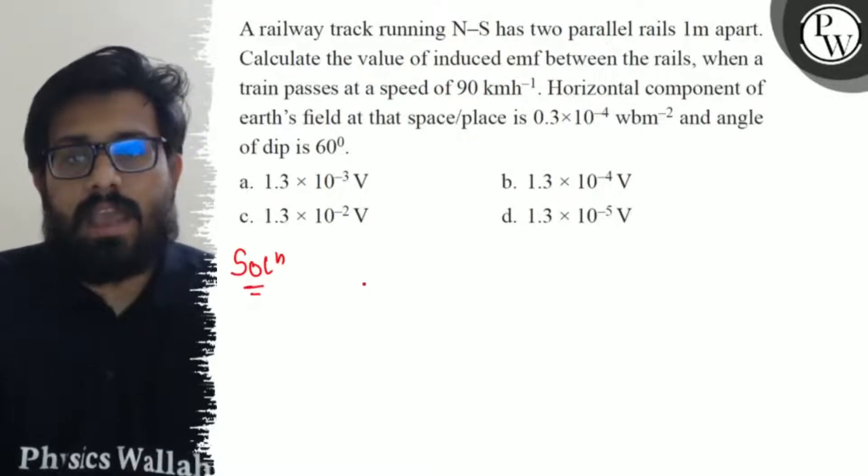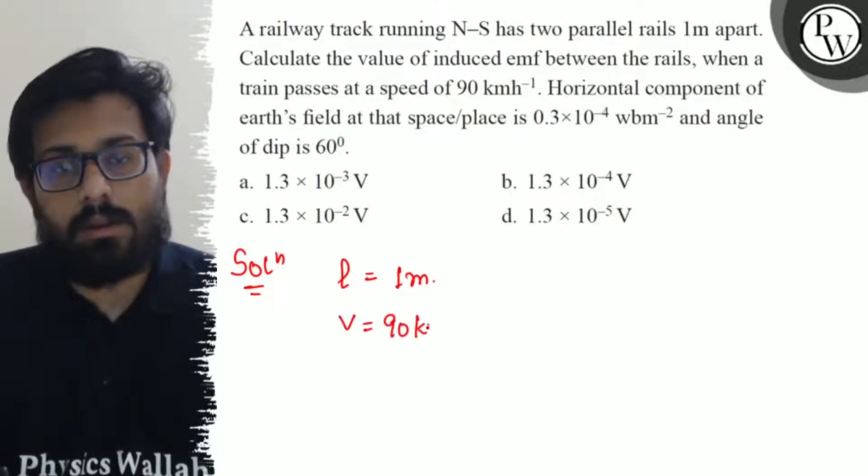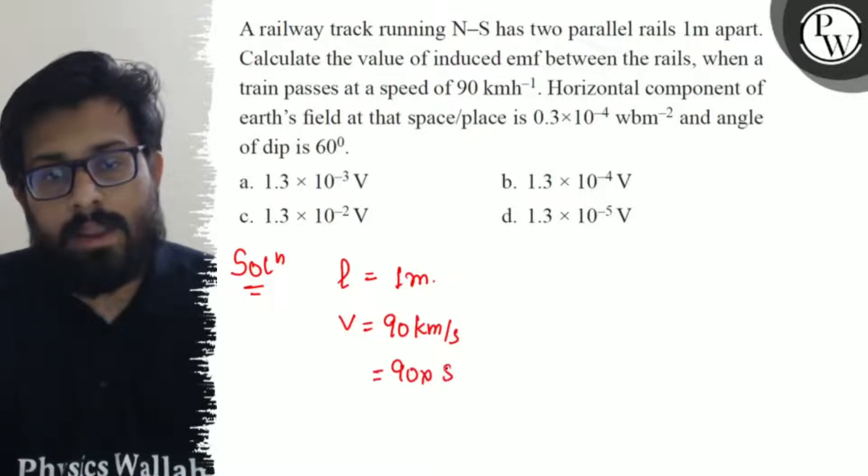The length of the rail, the distance between the parallel rails, is one meter and the train is moving with a speed of 90 kilometers per hour. If you want to convert 90 into meters per second, multiply by 5/18 and you get a value of 25 meters per second.